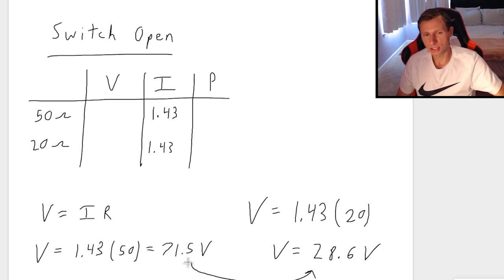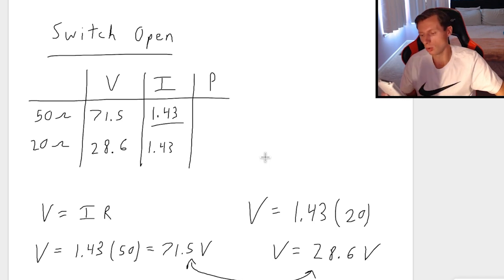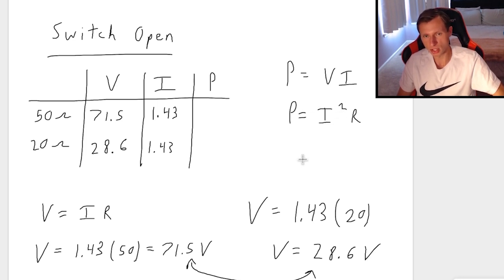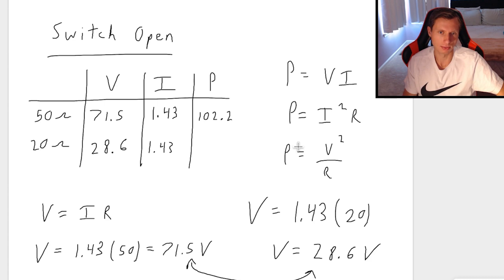To find power, it's very simple — power equals voltage times current. Power technically has three equations: P = VI, P = I²R, and P = V²/R. All three would work, but I'll use the first one since I already have voltage and current. So the power for the 50 ohm resistor is 102.2 watts. And for the 20 ohm resistor, I get 40.9 watts.